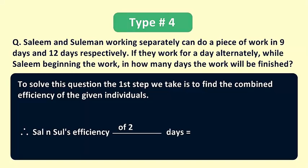Therefore Salim and Suleiman's combined efficiency of 2 days is equal to 1/9 plus 1/12, because it's given that Salim does a piece of work in 9 days and Suleiman does the same piece of work in 12 days. Now adding their individual efficiencies we get 7/36.